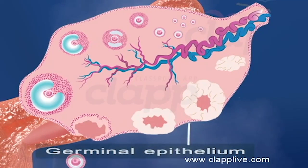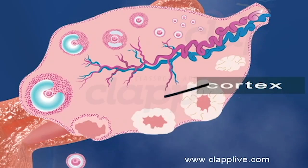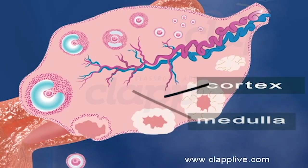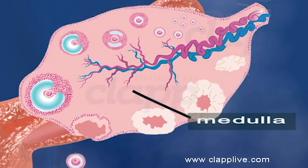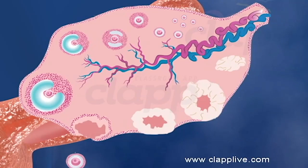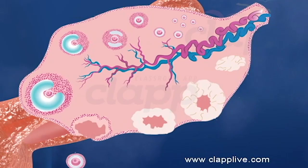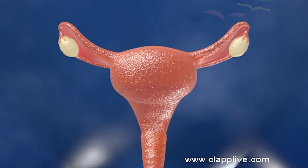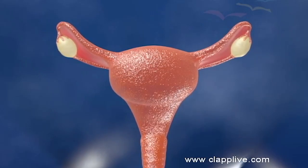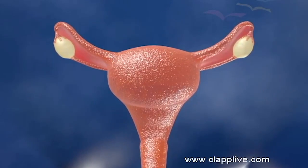Each ovary is 2 to 4 centimeters long and 2 centimeters wide. It is composed of connective tissue called stroma, covered by a layer of germinal epithelium. The stroma has an outer cortex and an inner medulla. The ovarian cortex contains rounded bodies called follicles at various stages of development, and each follicle contains an ovum.